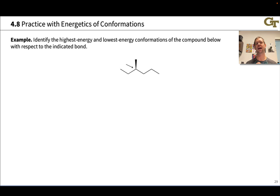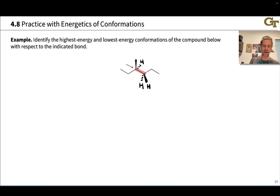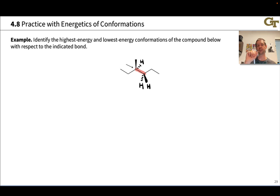Let's practice conformational analysis by identifying the highest energy and lowest energy conformations of a compound with respect to rotation around an indicated bond. The arrow tells us we want to look at the molecule from a specific perspective and think about rotation around the highlighted bond. As recommended previously, it's a great idea to draw in the implied hydrogens with wedges and dashes on the carbons involved in the bond of interest, because we're going to lay down those hydrogens when we move into a Newman projection view. Torsional angles become extremely easy to visualize using Newman projections, so we'll use them here.